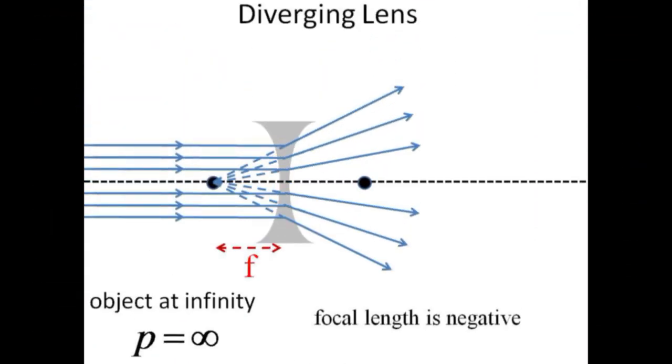A diverging lens, with its negative focal length, causes parallel rays from a distant object to diverge as if they originated at the focal point.